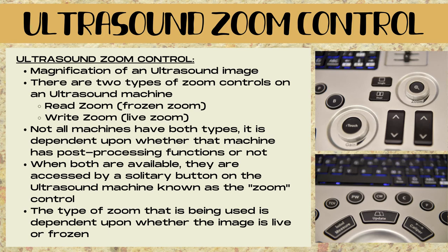Not all ultrasound machines have both types — it's dependent upon whether that machine has post-processing functions or not. When both types of zoom are available, they are accessed by a solitary button or knob on the ultrasound machine known as the zoom control, and the type of zoom being used is dependent upon whether the image is live or frozen.